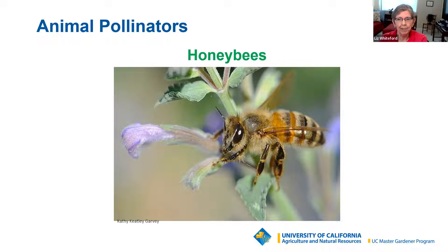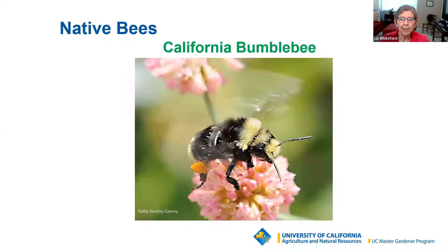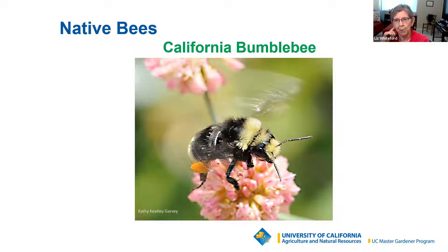Honeybees live in hives and bumblebees live in colonies — both are social. The aggressiveness of honeybees and bumblebees is due to their need to defend the colony; they sting once and then die. Opposed to the social bees are native bees, which I didn't even know existed until I took my course. The California bee is the only social bee among the native bees. There are 20,000 species of native bees in the world, 4,000 species in the US, and 1,600 species living in California.